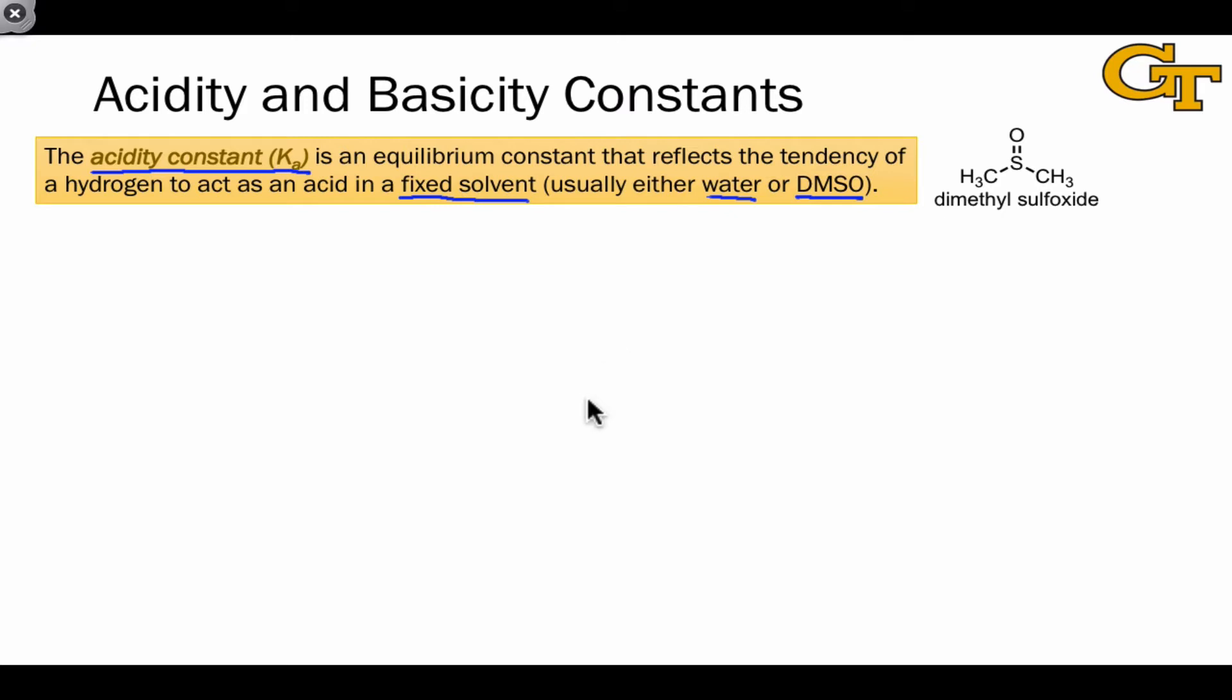The fixed solvent is important so that we can compare the acidity of different molecules using Ka values. It's worth thinking just a little bit about the reaction associated with a Ka value, which involves proton transfer to this fixed solvent to form the conjugate base of the acid and the conjugate acid of the solvent, which here I'm representing generically as HS+. Every hydrogen within a molecule in a distinct chemical environment has a unique pKa value. So for example,